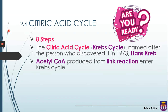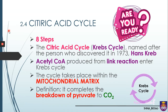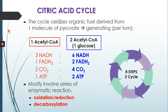The acetyl-CoA produced from the link reaction will now enter the citric acid cycle. The cycle takes place within the mitochondrial matrix, and it completes the breakdown of pyruvate into carbon dioxide. One cycle — with one acetyl-CoA as input — produces three molecules of NADH, one molecule of FADH2, two molecules of carbon dioxide, and one molecule of ATP.